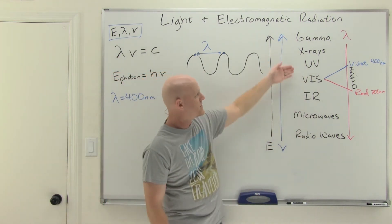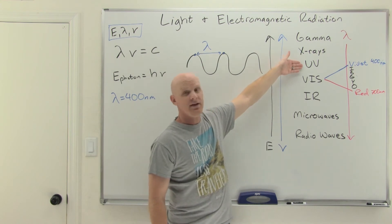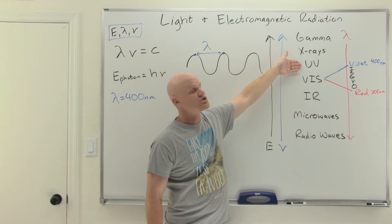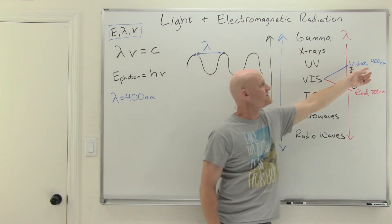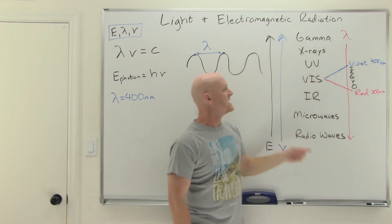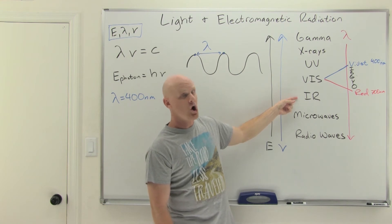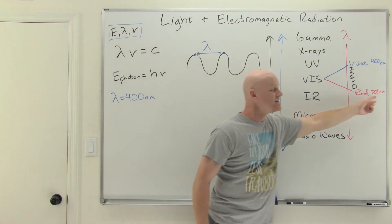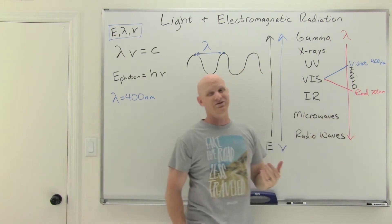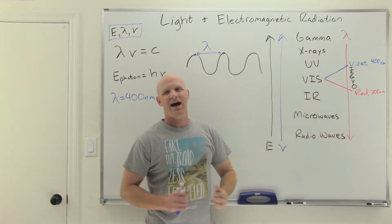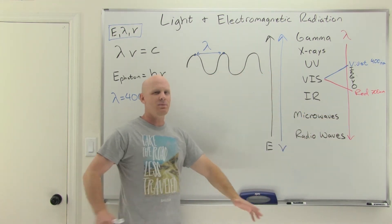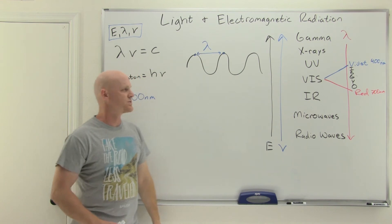Ultraviolet light will have a shorter wavelength than 400 nanometers, and infrared light will have a longer wavelength than 700 nanometers. Outside of that, you don't need to memorize those ranges.